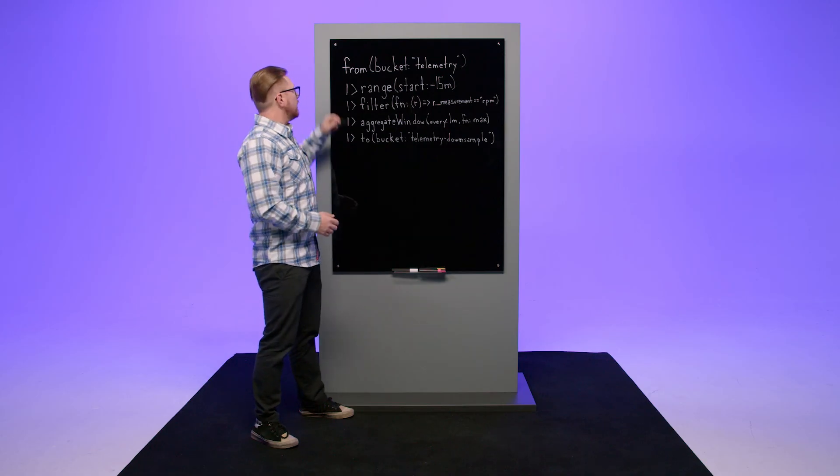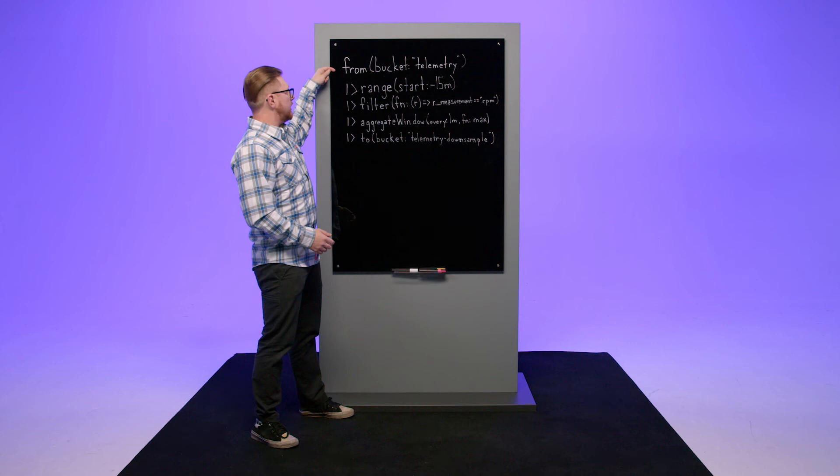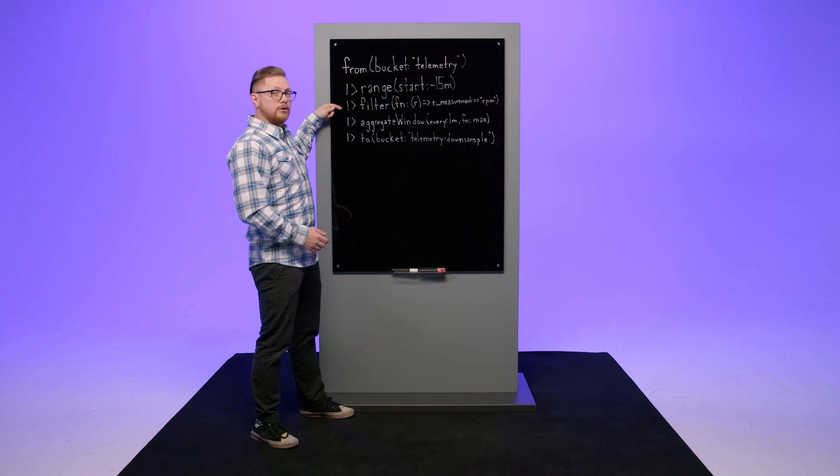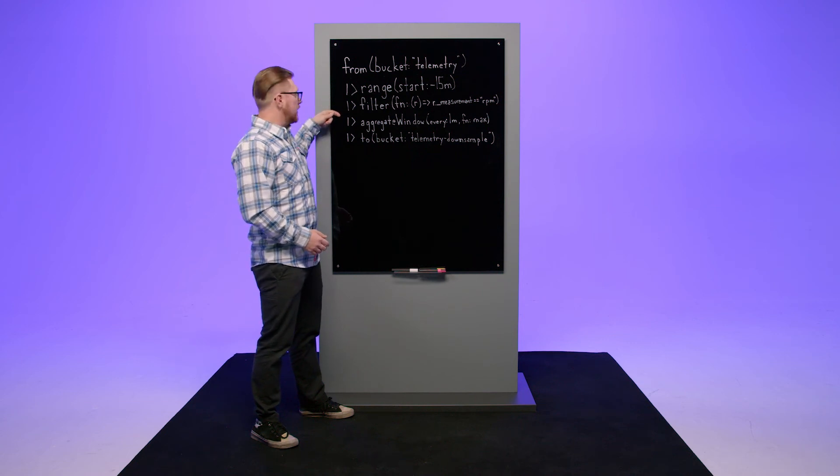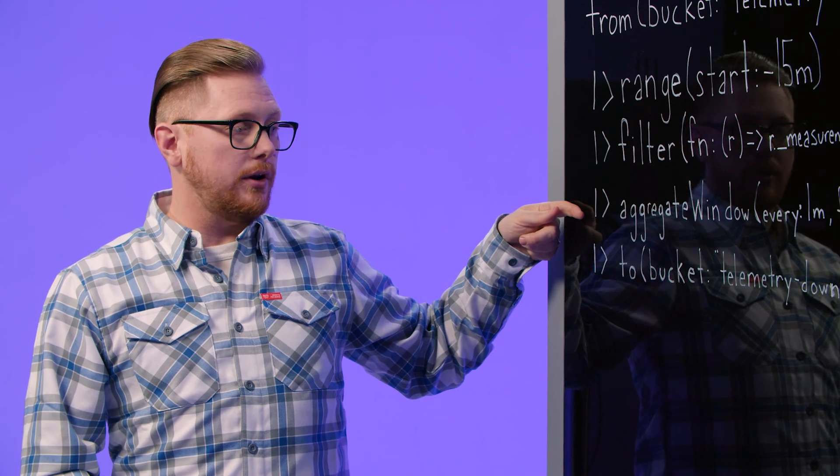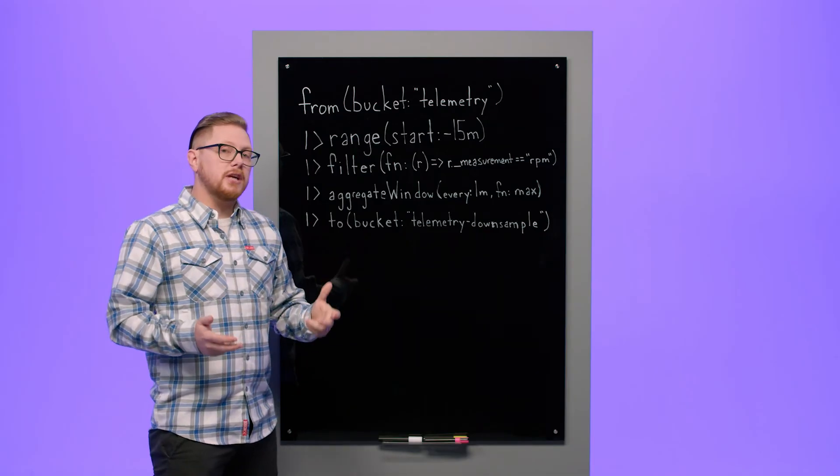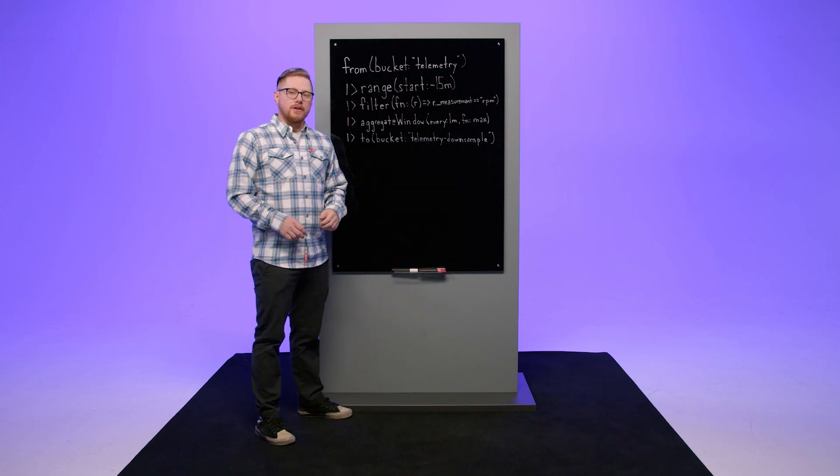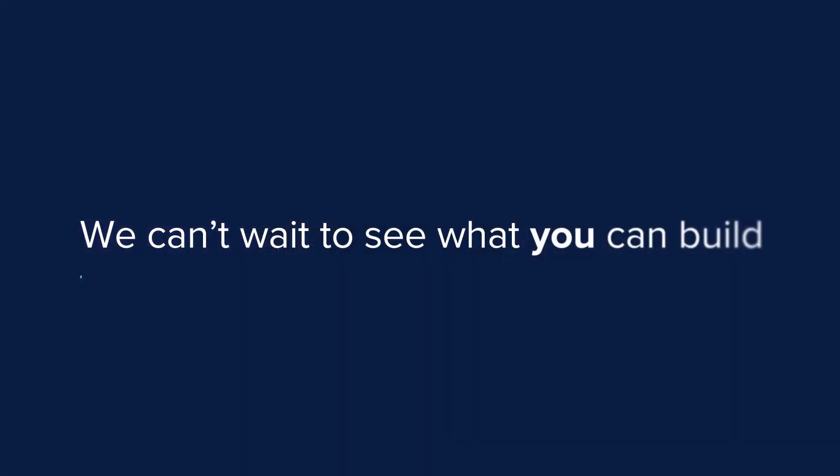We now have a query that reads from an InfluxDB database, uses range and filter to limit what data we'd like, transforms it using the aggregate window function, and then writes it back to a database. This is the most common thing that you'll do in Flux. Using this knowledge of Flux basics, I'm excited to see what you build.